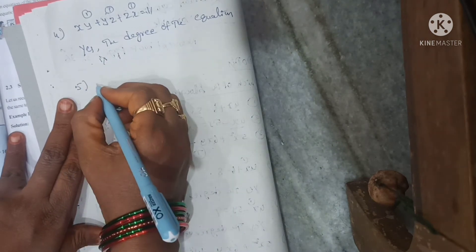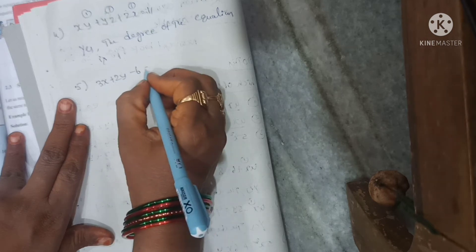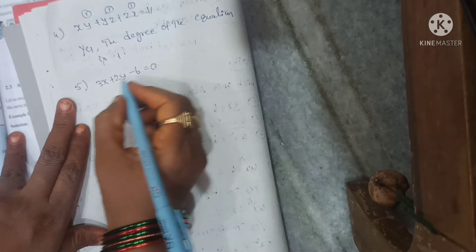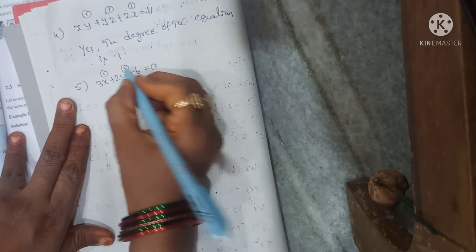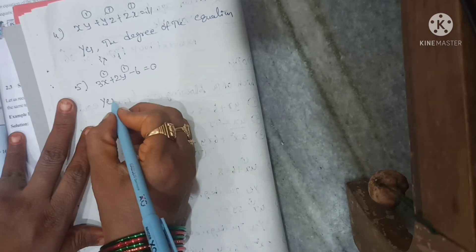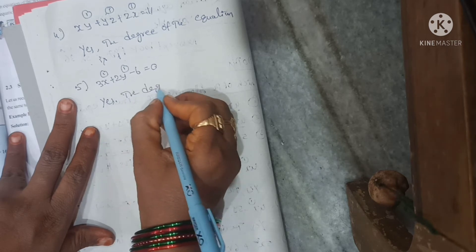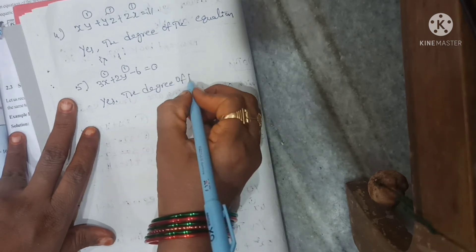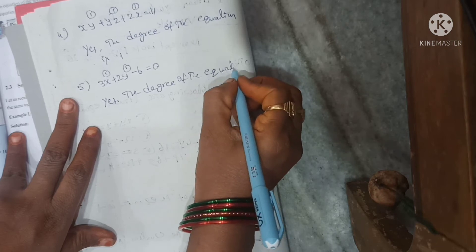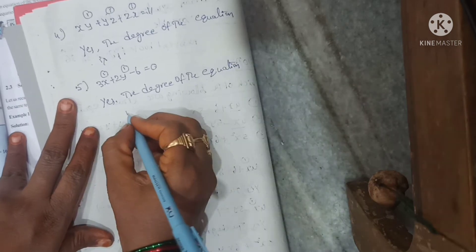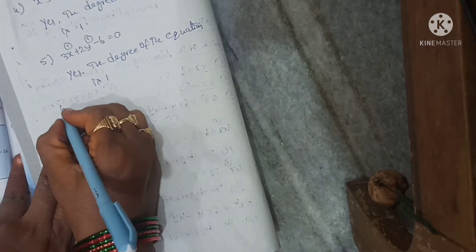Fifth one: 3x plus 2y minus 6 is equal to 0. Here degree is 1 for each term. So yes, the degree of the equation is 1.